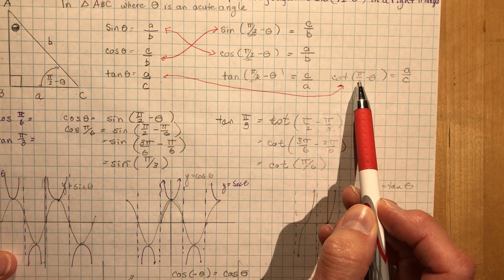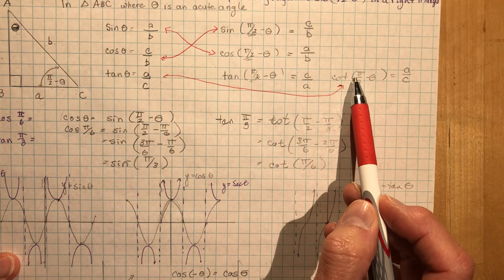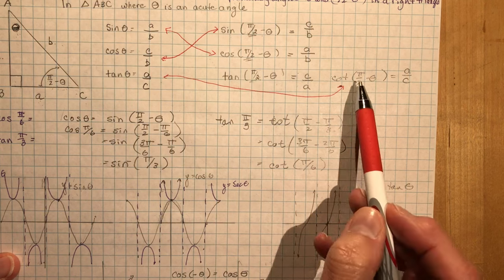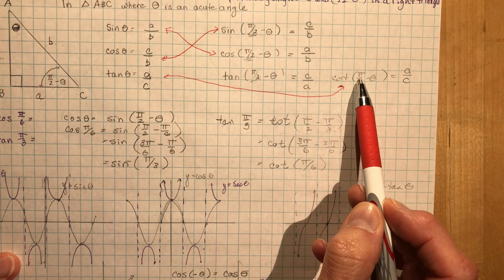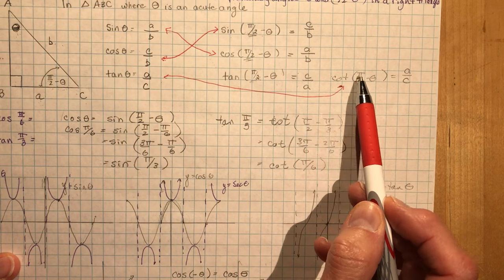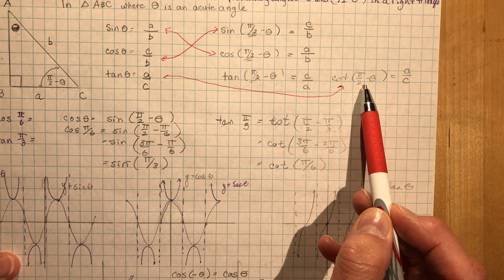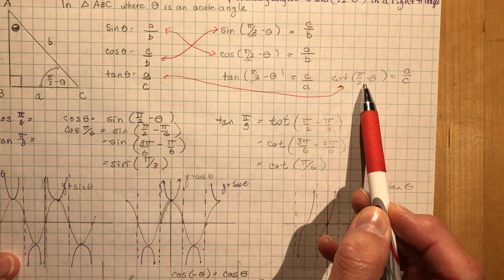Now there are some other co-function identities that I'm going to show you a little bit later, where you're working with the 3 pi over 2, or instead of subtracting theta you're adding a theta to it. I'll go over those a little later when it shows up. I think it's 7.3 before you're using those ones.